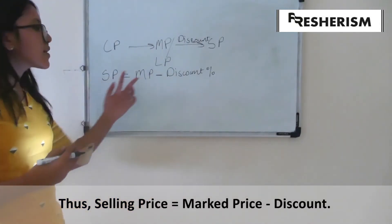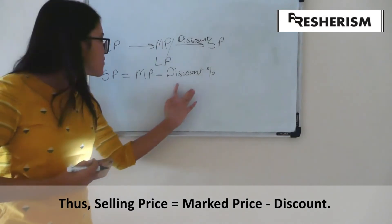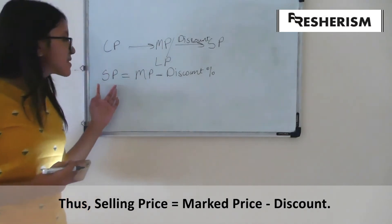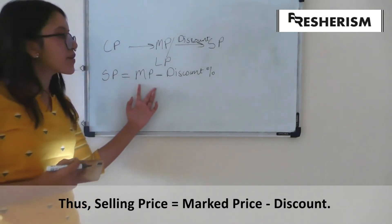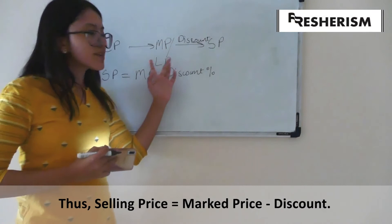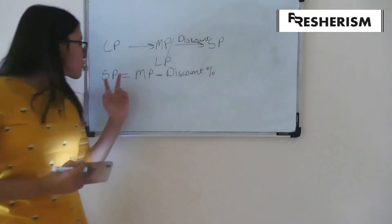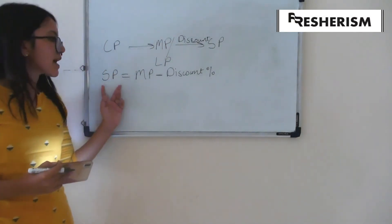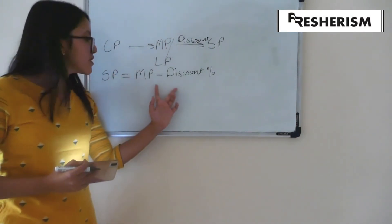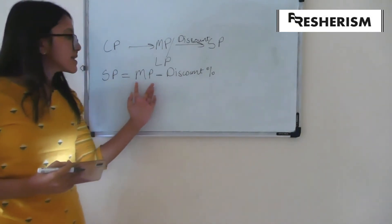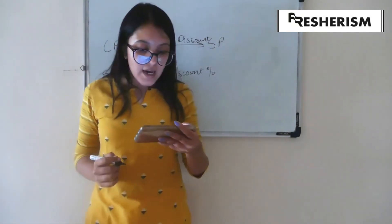We all know that when discounts are given, obviously the selling price will be lesser than the mark price or the list price. Hence, to find selling price, we just find the difference between the discount amount and the mark price.